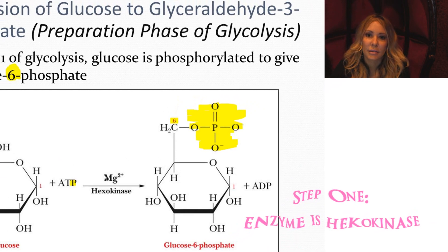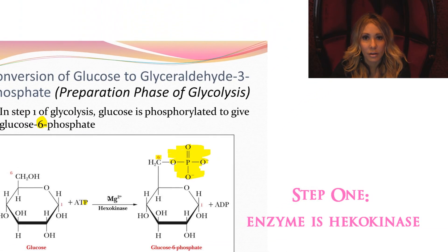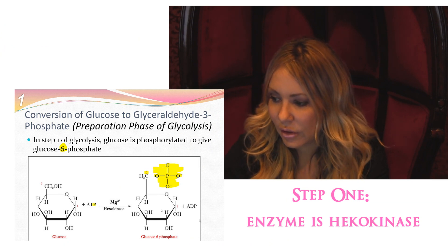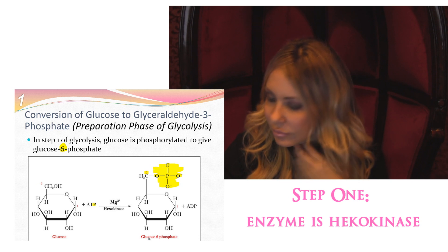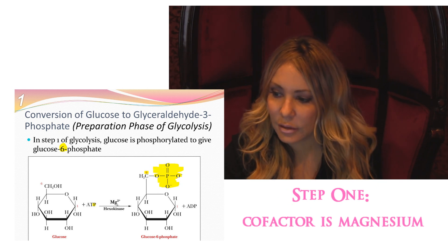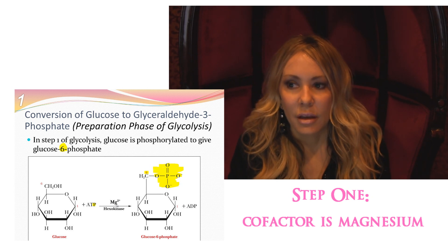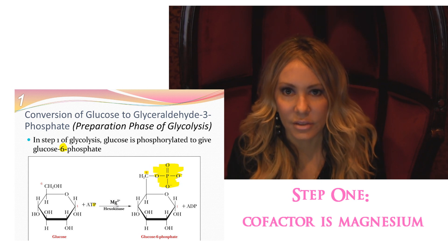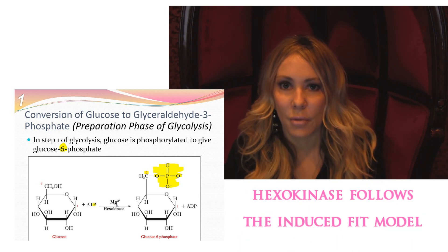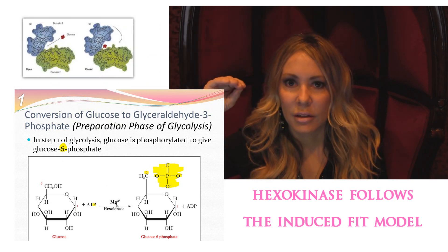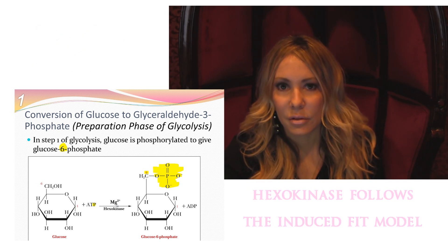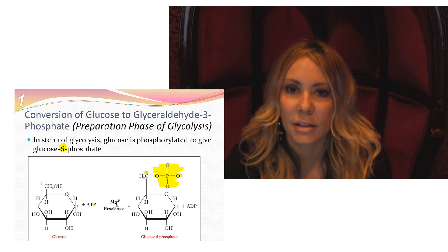This enzyme is regulated — not the most regulated, but step one is typically going to be regulated. It is going to be controlled by end product inhibition, so the amount of glucose-6-phosphate will be feeding back upon this enzyme. Magnesium is going to be a cofactor; being a positive molecule, it helps constrain the negative ATP molecule in place in the active site. This hexokinase definitely follows the induced fit model — it's almost like a Pac-Man. When the substrates bind, it closes and catalyzes the reaction, holding the ATP in place with magnesium before the substrate glucose comes in.